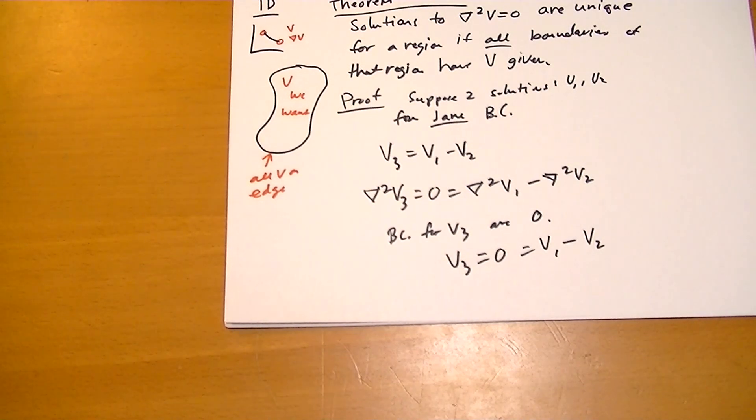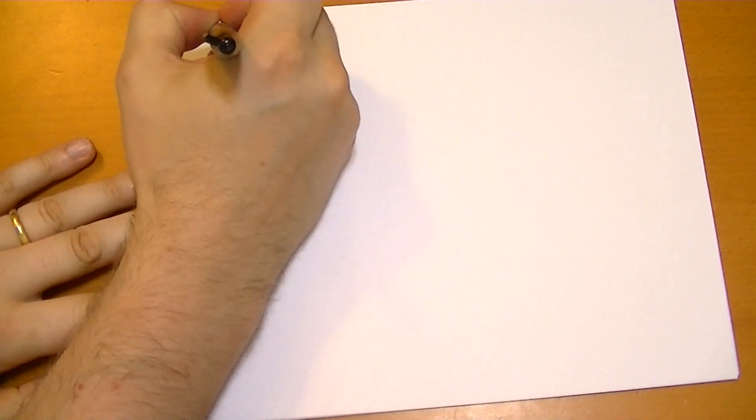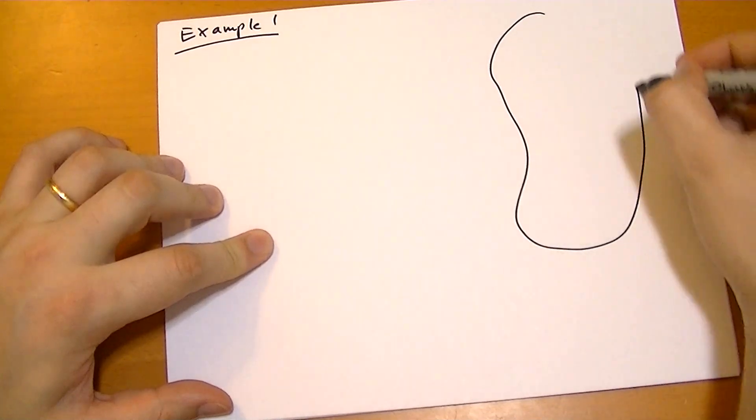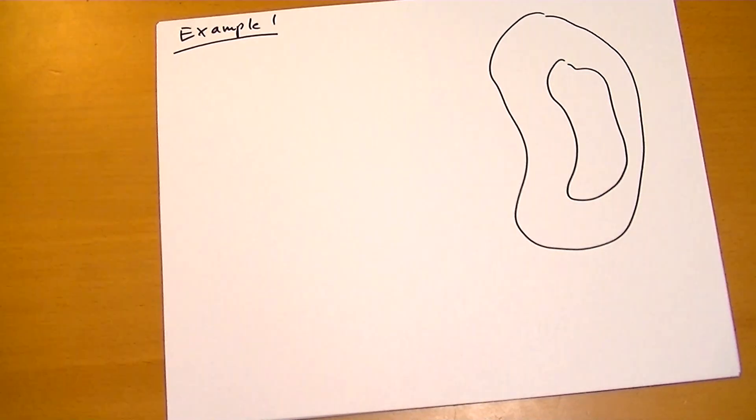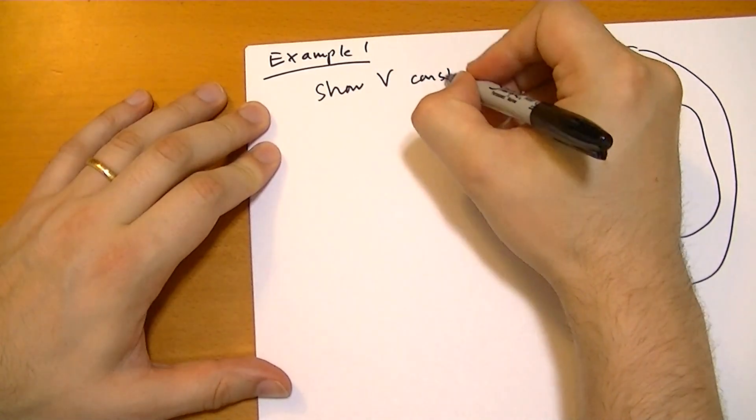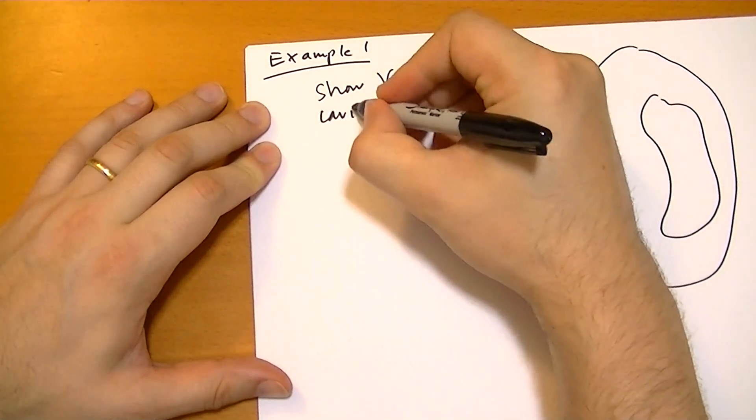Let's go through an example: Faraday's cage. We have some conductor with a cavity, and there's no charge on the inside. The question is to show that V is constant inside the cavity.